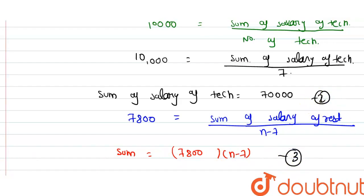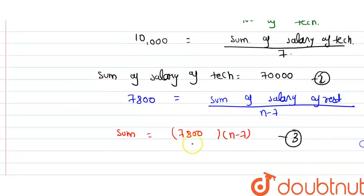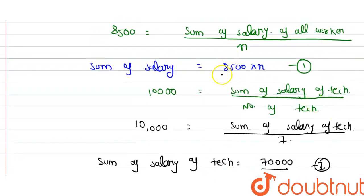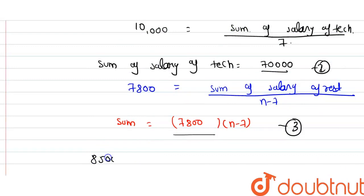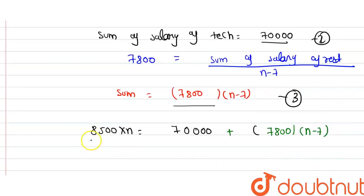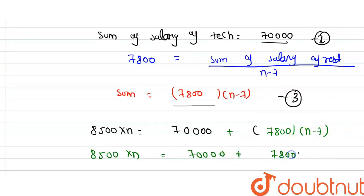तो जो salary का sum आएगा rest workers से और technicians से, वो total salary के sum के equal होगा। तो: 8,500 × N = 70,000 + 7,800 × (N-7). अब N-7 से multiply करेंगे: 8,500N = 70,000 + 7,800N − 7,800 × 7.